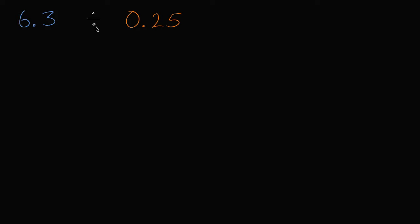Let's figure out what 6.3 divided by 0.25 is. When I look at something like this, the first thing I think about is, is there a way that I can rewrite this? Instead of dividing by 25 hundredths or 0.25, I could divide it by a whole number, maybe 25.